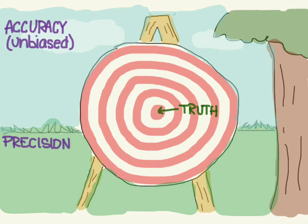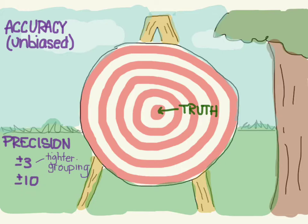When we were talking about confidence intervals, we were talking about plus or minus 3 versus plus or minus 10. Plus or minus 3 is much closer, and so has more precision than the plus or minus 10.